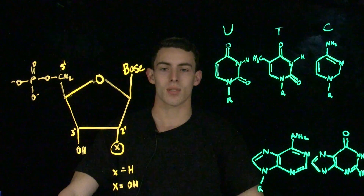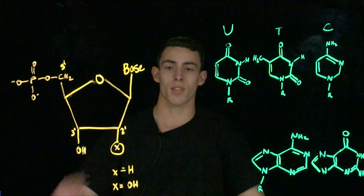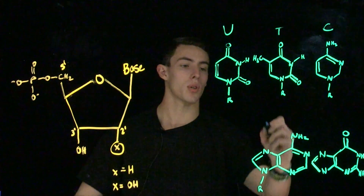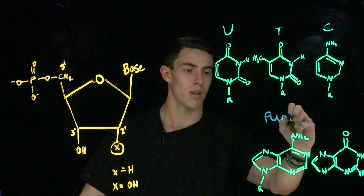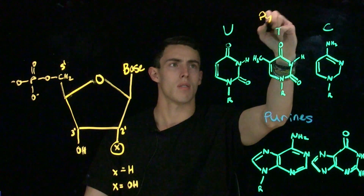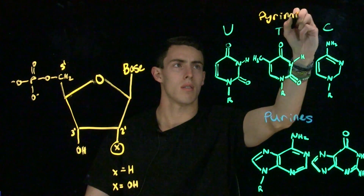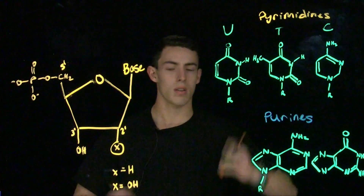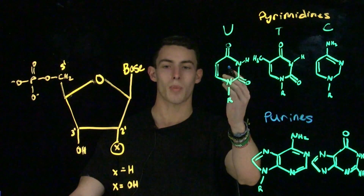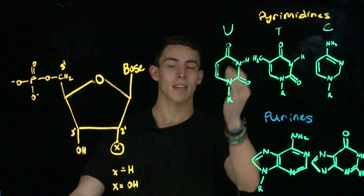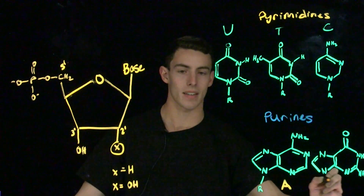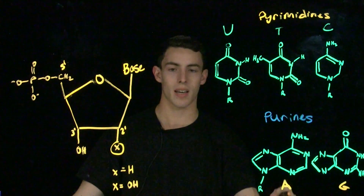DNA and RNA's unique capacity to store information comes from their structures and the structures of their bases. The bases are organized into two different types: purines, which have two rings, and pyrimidines, which have a single ring. The pyrimidines are uracil, thymine, and cytosine. Uracil is special in that it's only present in RNA, and thymine is only present in DNA.